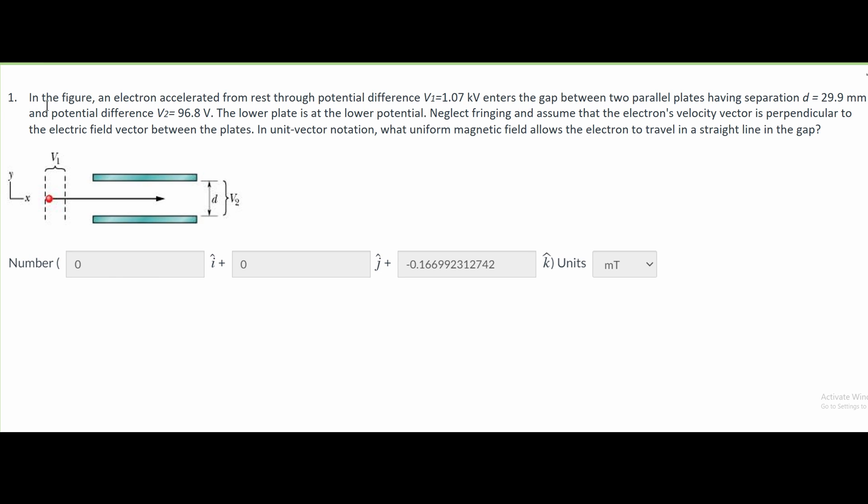For this question, we're told in the figure an electron accelerated from rest through potential difference V1 = 1.0 kV enters the gap between two parallel plates.